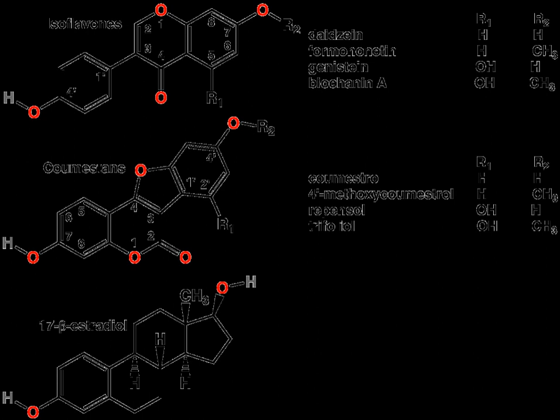A phytoestrogen is a plant-derived xenoestrogen not generated within the endocrine system, but consumed by eating phytoestrogenic plants. Also called a 'dietary estrogen', it is a diverse group of naturally occurring nonsteroidal plant compounds that, because of its structural similarity with estradiol, have the ability to cause estrogenic and/or antiestrogenic effects.